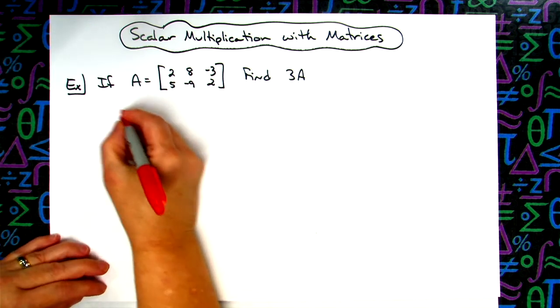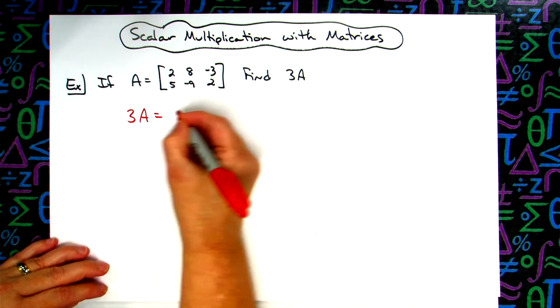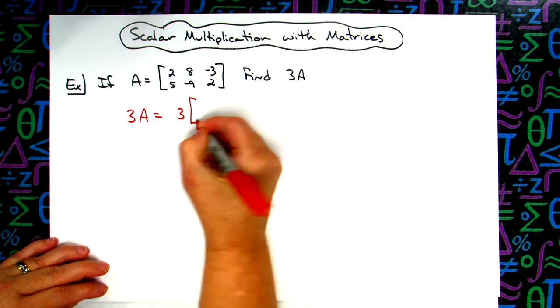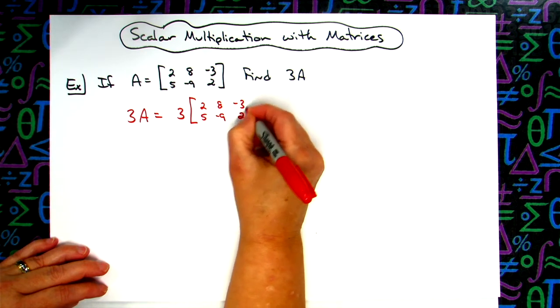All right, so showing some work here to know where that's all coming from. 3 times A would be 3 times that A matrix which is going to be the 2 over the 5, the 8 and the negative 9 and the negative 3 and the 2.